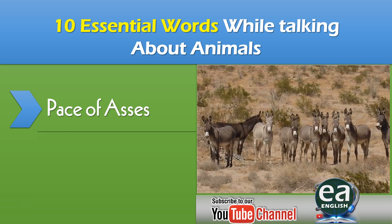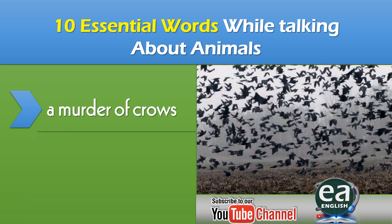For donkeys, when there are a large number in one area, we say a pace of asses. When there is a large group of crows together, they are in unity and we say a murder of crows.